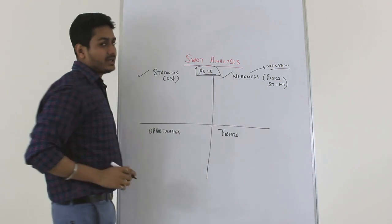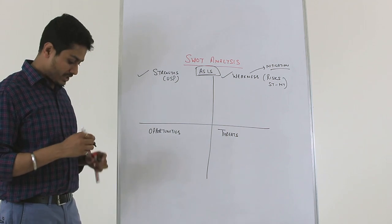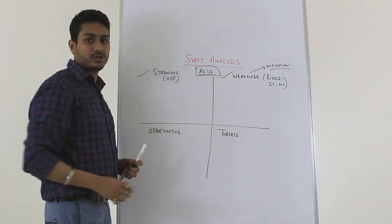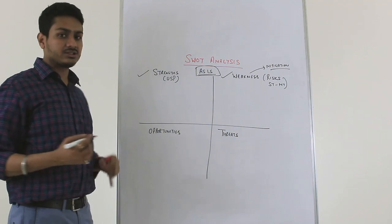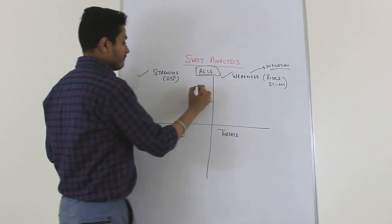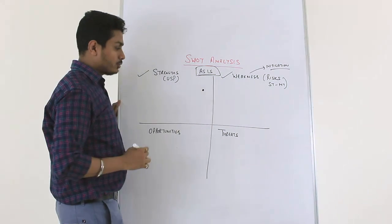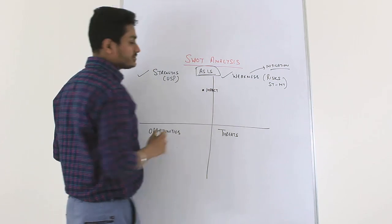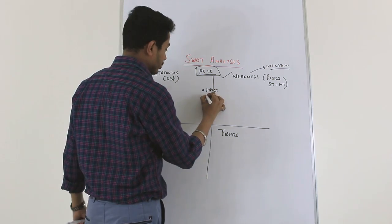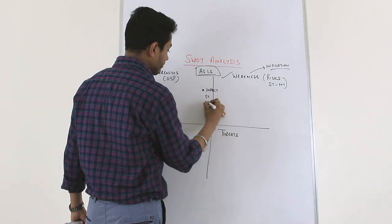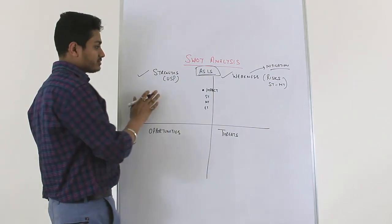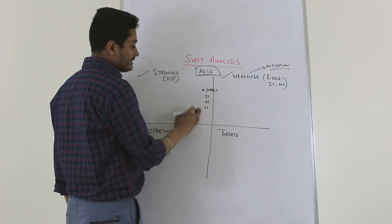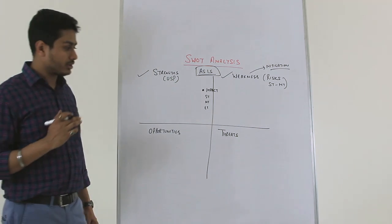Many students get confused about whether something is a strength, an opportunity, or where it should be plotted on the SWOT. There are three questions that, if answered, will remove this doubt. The first is: what is the impact of the strength, weakness, opportunity, or threat in the short term, medium term, and long term? Keeping these questions in mind helps you plot elements in the right quadrant.